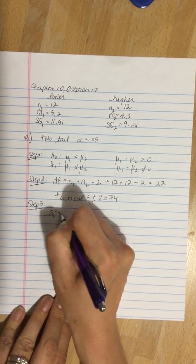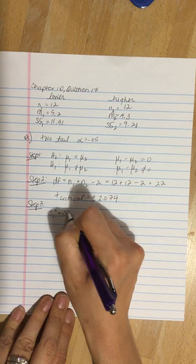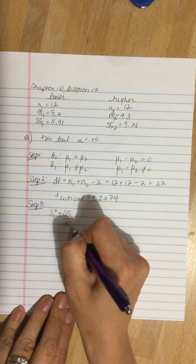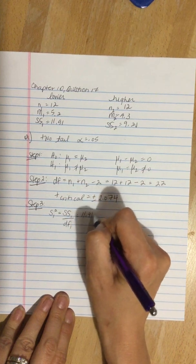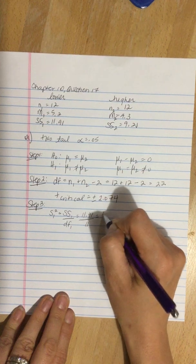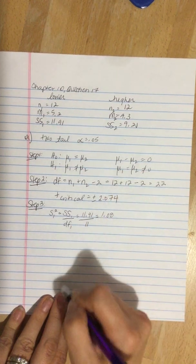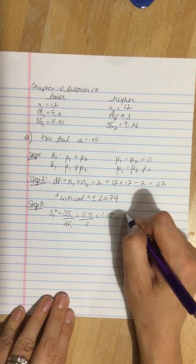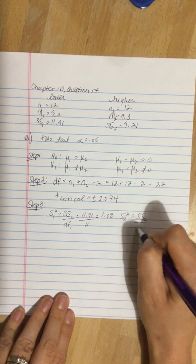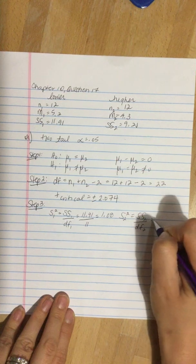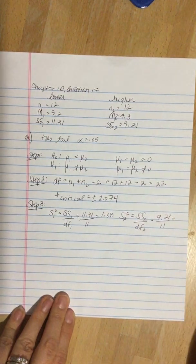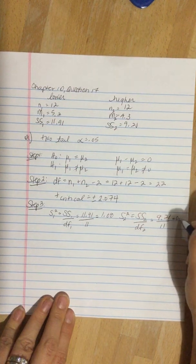So the variance of population 1—we need to get the sum of squares divided by the degrees of freedom, so that's 11.91 divided by 11 = 1.08. We do the same for the other population. That's 9.21 divided by 11, which is 0.84.